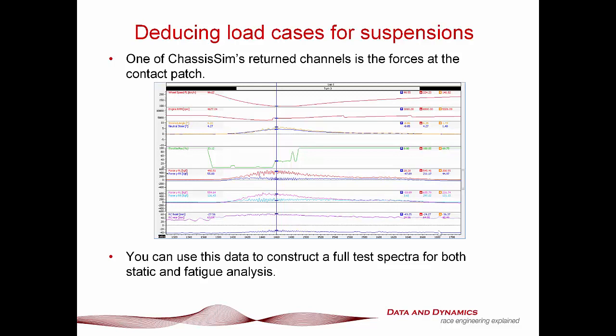Deducing load cases for suspensions: one of ChassisSim's return channels is the forces at the contact patch. Here we have a simulation for an F3 car — speed, RPM, steered angle, neutral steer, throttle. And in here is the money shot: we've got the lateral forces at the contact patch — front left, front right, rear left, and rear right. The great thing is this gives you not just the maximum points for a static analysis, but a full spectrum for fatigue loading through the entire lap. All you've got to do is plug this into your FEA finite element analysis package or put it on a rig to see what this is actually doing.